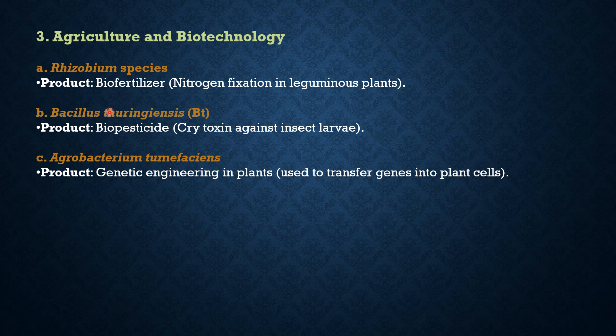In agriculture and biotechnology, Rhizobium species are very commonly studied. They are nitrogen-fixing microbes widely used in bio-fertilizers. The advantage is they increase soil fertility by converting atmospheric nitrogen into a usable form for plants, reducing dependency on chemical fertilizers and promoting sustainable agriculture. The disadvantage is that effectiveness depends on specific compatibility between the plant and bacterial strain, with poor performance in soils with low organic matter or pH imbalance.